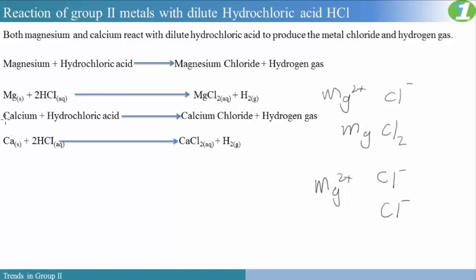Calcium will also react with HCl, but a bit more vigorously since it is more reactive than magnesium. Again, we produce salt and hydrogen gas. Bear in mind that trends in group 2 metals are very similar to trends in group 1, so the same types of reactions are observed. The only difference is that group 1 metals are more reactive than group 2 metals, so those reactions might be more vigorous or even a bit violent.